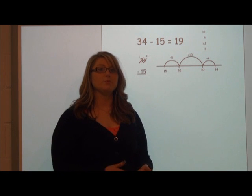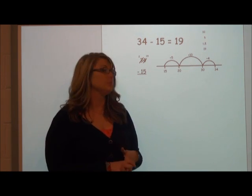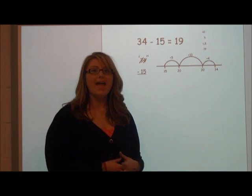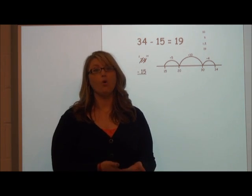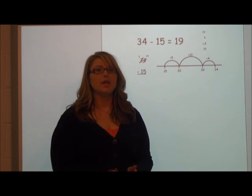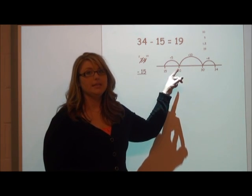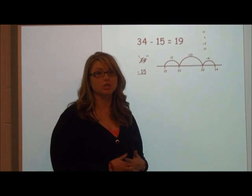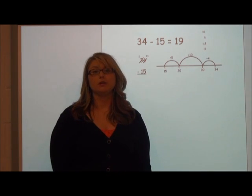Students would follow the same procedure as before with the smaller numbers. We would start with the subtrahend, which is 15, and count up or add up until we get to the minuend, or the whole of 34. Being that the numbers are bigger, we can make larger jumps. If we start with 15, we can add 5 to get to 20. Then we can add 10 more to get to 30. Last, we would add 4 to get to the minuend of 34.